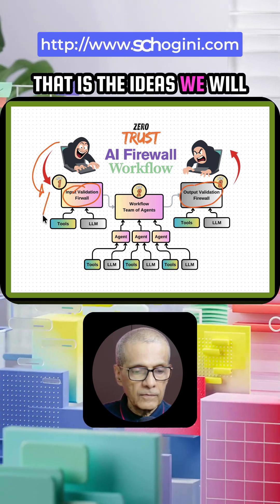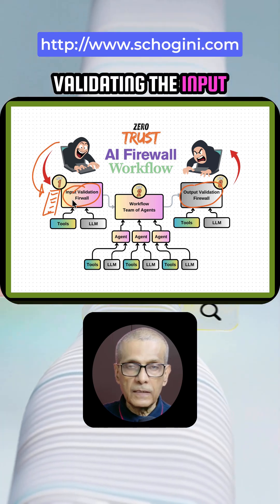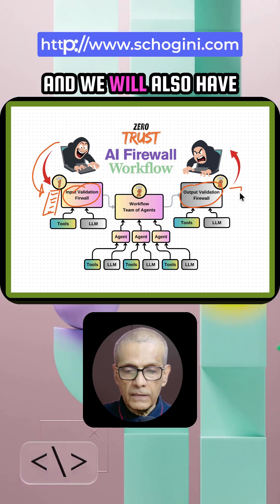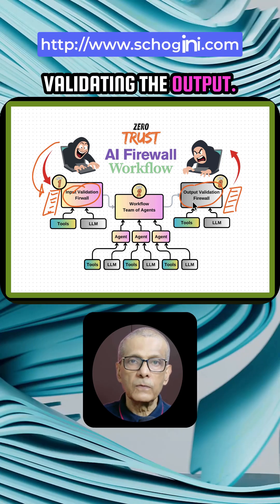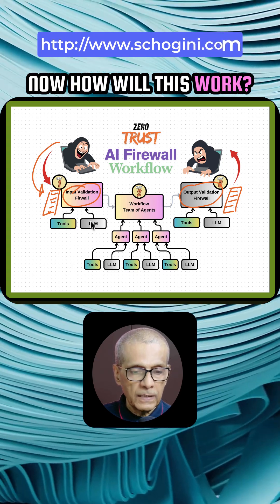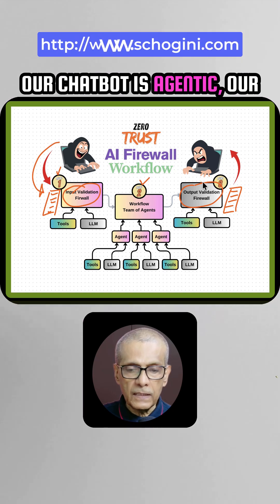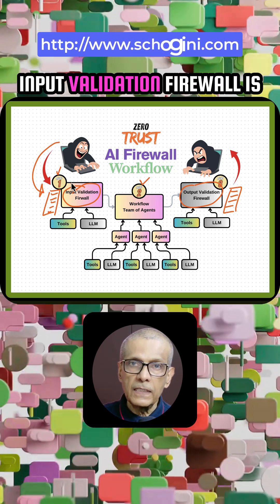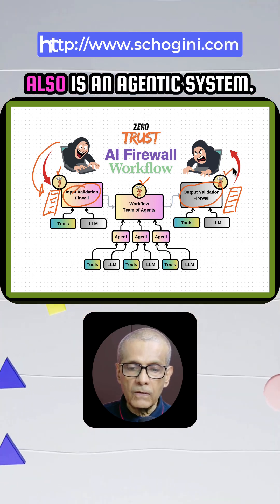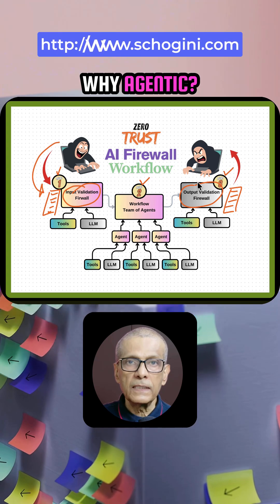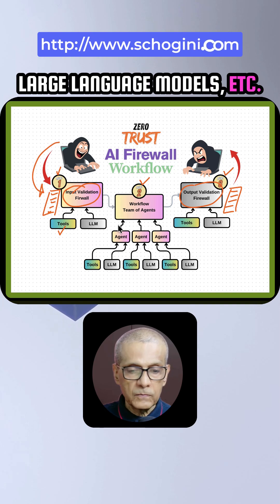That is the idea. We will have our firewall prompt validating the input, and we will also have our firewall prompt validating the output. The whole thing is agentic — our chatbot is agentic, our input validation firewall is an agentic system, and output also is an agentic system. Why agentic? Because it has the ability to access tools and different large language models.